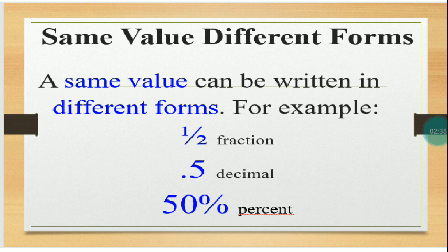Same value, different forms. A same value can be written in different forms. For example, one-half as a fraction, 0.5 as a decimal, or we also read that one as five-tenths, then percent as 50%.